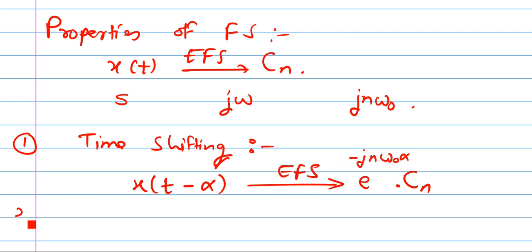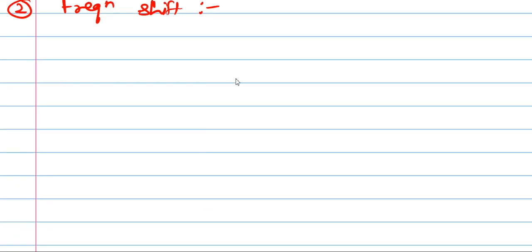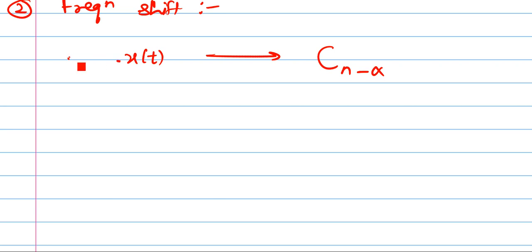Here minus alpha, so here also minus alpha — same sign on both sides. Property number 2 is the frequency shift property. Now the shift is in the exponential Fourier series coefficient. Instead of Cn we have Cn minus alpha. In one domain we shift; in another domain we have exponential multiplication. The signal X of t gets multiplied by e raised to the power of j-n-omega-0-alpha.